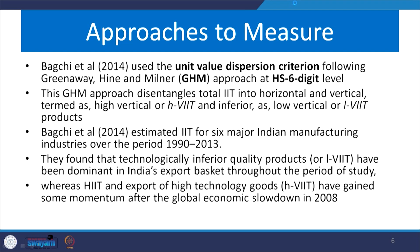Bakhshi's 2014 paper used the unit value dispersion criteria — the Greenway, Hine and Milner (GHM) approach — at the 6-digit level. Accordingly, lower or higher vertical IIT is classified based on this approach. They studied 6 major Indian manufacturing industries over 1990 to 2013. They found that technologically inferior quality products, especially lower vertical IIT, have been dominant in India's export basket throughout the study period.